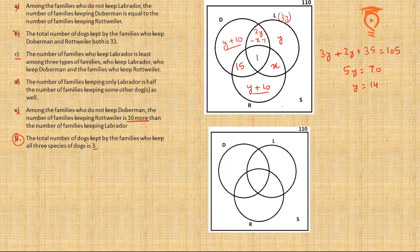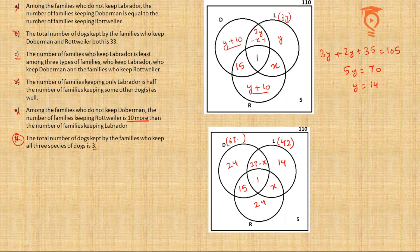Now that y = 14, I move to the second diagram to write numbers independently of variables as much as possible. So: only-Labrador = 14; Labrador-Rottweiler (no Doberman) = 27−x; Labrador-Rottweiler-Doberman = x; all-three = 1; Doberman-Rottweiler (no Labrador) = 15; only-Rottweiler = 24; only-Doberman = 24. Total Doberman becomes 67−x and total Rottweiler becomes 40+x.